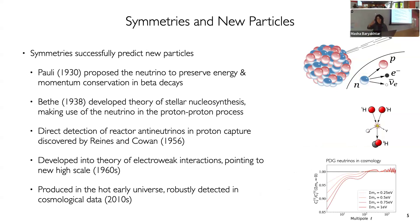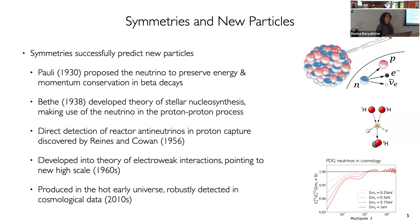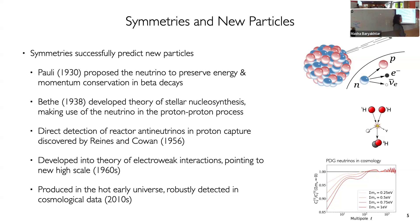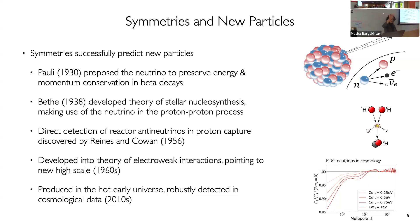Perhaps the simplest example that evolved over the last century is the idea of taking momentum conservation seriously enough to propose the existence of a new particle. In beta decay, there seemed to not be both energy and momentum conservation, so Pauli in 1930 proposed the existence of a neutrino — which just eight years later, even though it was still a very hypothetical particle, was incorporated into theories of stellar nuclear synthesis.